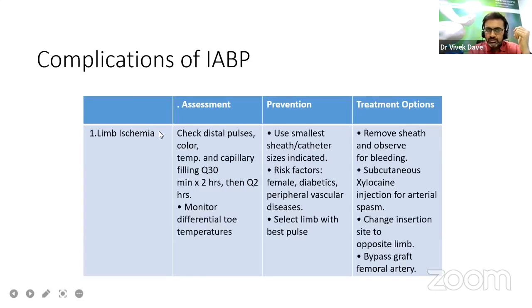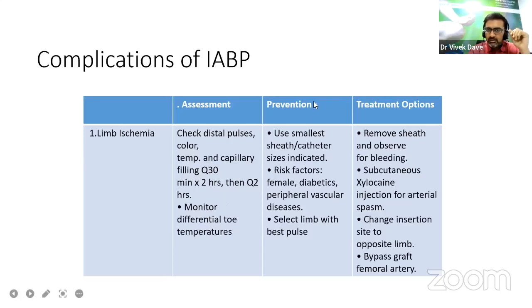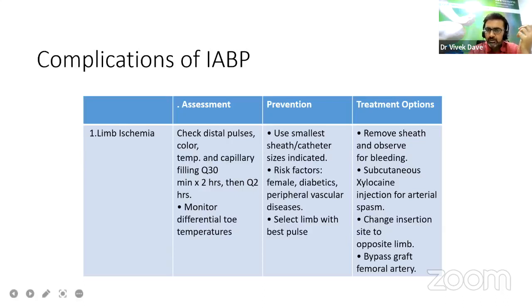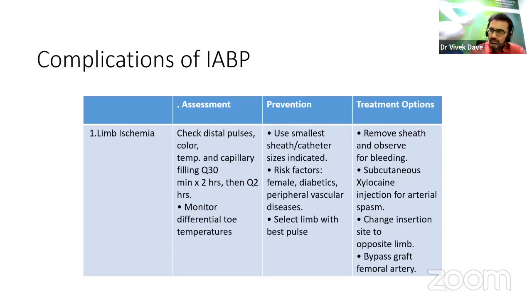For limb ischemia, assessment involves regular checking of distal pulse, color, temperature, and capillary refill. Prevention is to use the smallest sheath catheter size indicated. Additional risk factors include peripheral vascular disease and diabetes. Treatment options: remove sheath and observe for bleeding, subcutaneous xylocaine injection for arterial spasm, change insertion site to opposite limb, and femoral bypass graft. If there is occlusion, ultimately a femoro-femoral bypass may be needed.